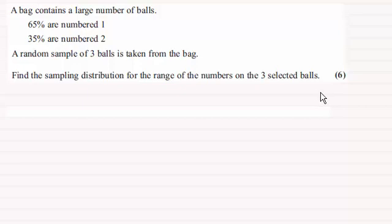When you come back, I'll take you slowly through the solution. Okay, welcome back. We've got to find the sampling distribution for the range of the numbers on the three selected balls. Let's define a random variable.